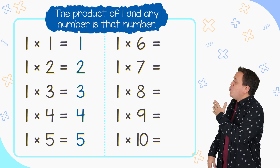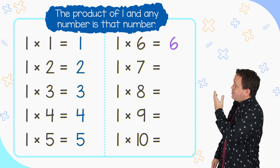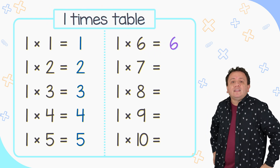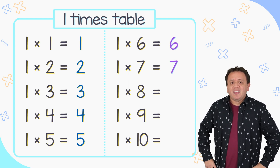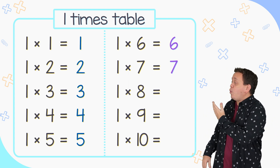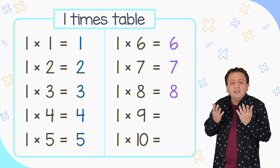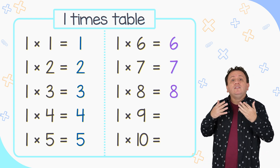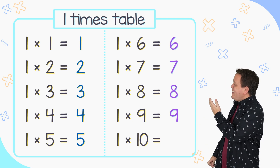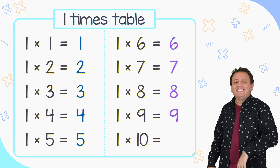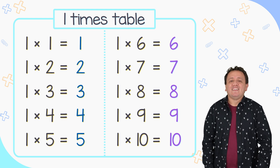For example, 1 times 6 equals 6 and 1 times 7 equals 7. 1 times 8 is equal to 8 and 1 times 9 is equal to 9. Finally, 1 times 10 equals 10. And we finish with our first multiplication table.